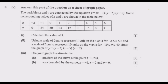Question 8a says: answer this part of the question on a sheet of graph paper. The variables x and y are connected by the equation y equals (x minus 3)(x minus 5)(x plus 2). Some corresponding values of x and y are shown in the table below. Number 1: calculate the value of k.